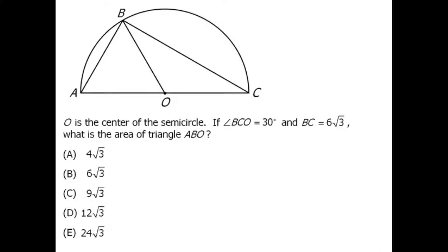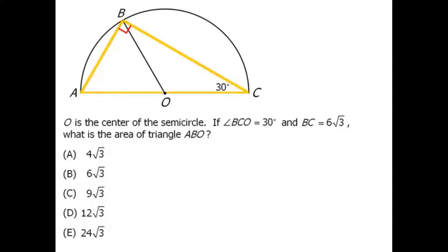Let's see what information we can add to this diagram. We are told that angle BCO is 30 degrees. We're also told that side AC is the diameter of our semicircle, so we can conclude that angle ABC is 90 degrees. We have a triangle where we know two angles, so we can calculate the third angle to be 60 degrees. We have a special 30-60-90 triangle.